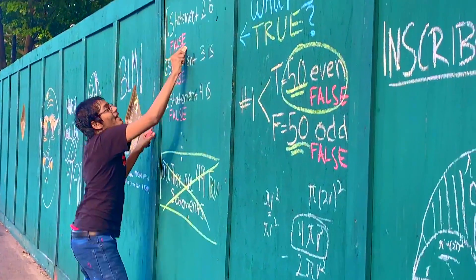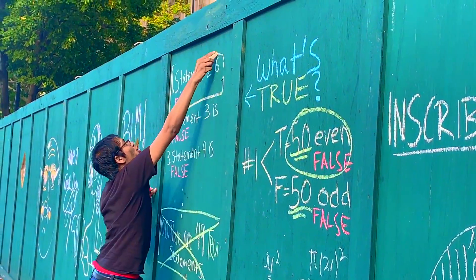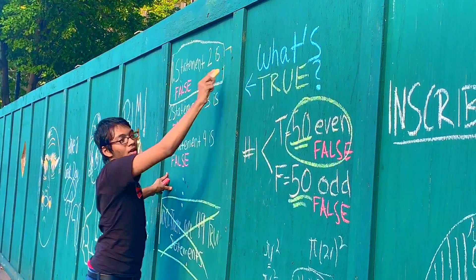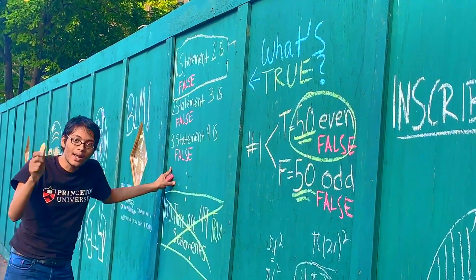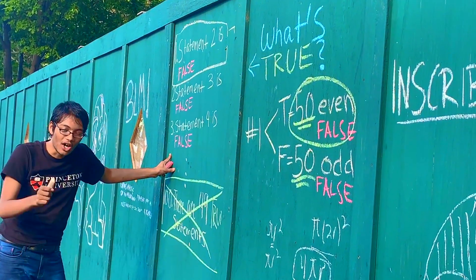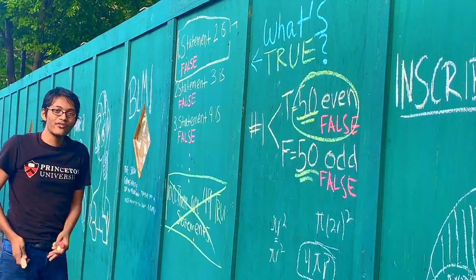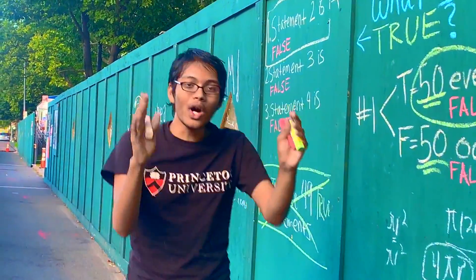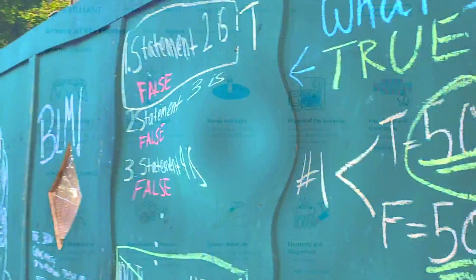Since statement 100 is even and false, that means the first statement is true and all the even-numbered statements are false. That's the answer to Brilliant's 100-statement problem, sponsored by Brilliant.org.